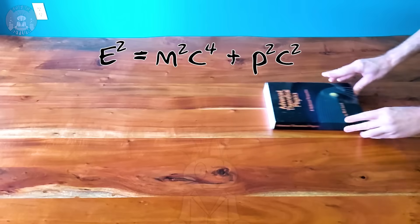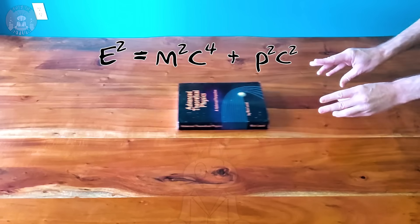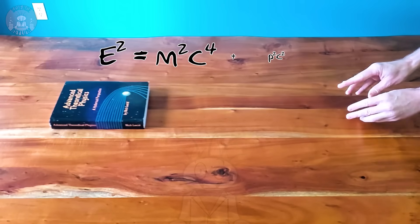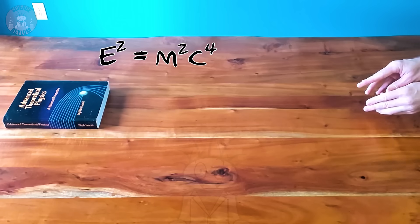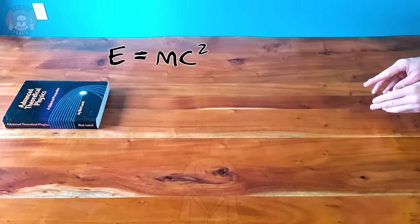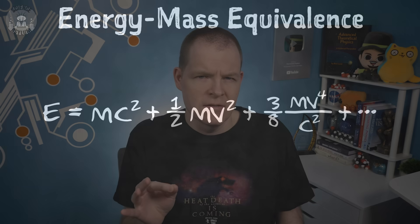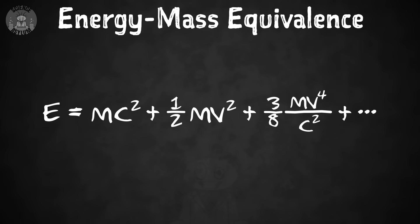If you want to see a derivation of that, check out page 204 of my book — links in the description. If this equation applies to our sliding book from earlier, we can see it still reduces to the familiar E equals mc squared once the book eventually stops. But let's compare it to Einstein's full version. Every single term in his version had a mass, which means it only applies to matter.